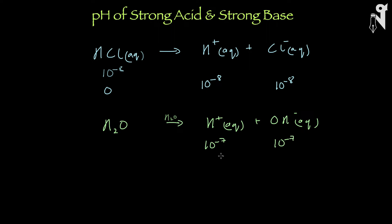So what is greater: 10 to the power minus 7 or 10 to the power minus 8? 10 to the power minus 7 is a bigger value. Your 10 to the power minus 7 is equal to 10 times 10 to the power minus 8, so it is 10 times greater. So can I ignore the H⁺ amount coming from water? Not at all.